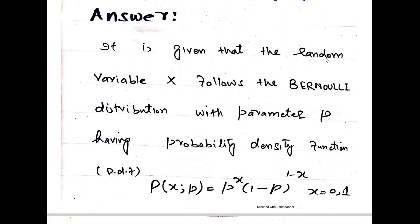It is given that the random variable x follows the Bernoulli distribution with parameter p. The probability density function of Bernoulli distribution is p^x (1 - p)^(1 - x), and the random variable x ranges from 0 to 1. Bernoulli distribution has two possible outcomes, such as yes/no or male/female.